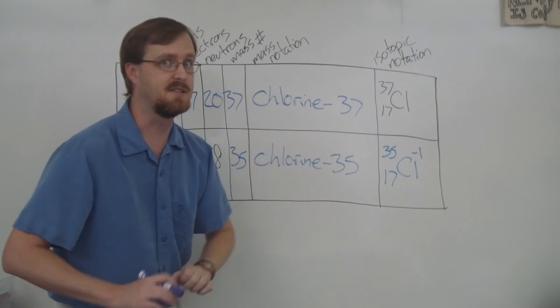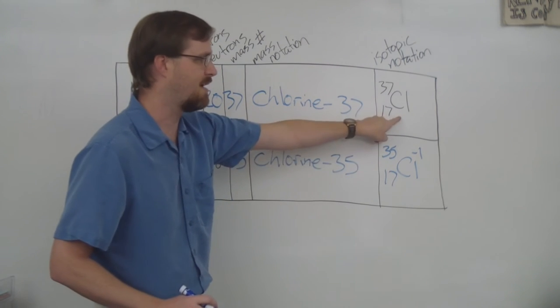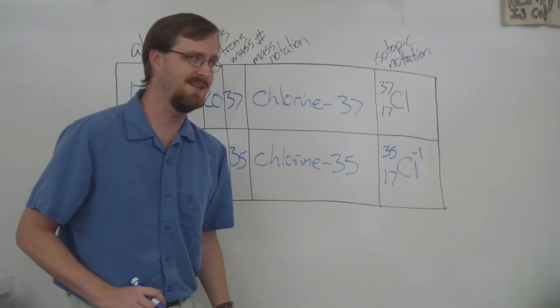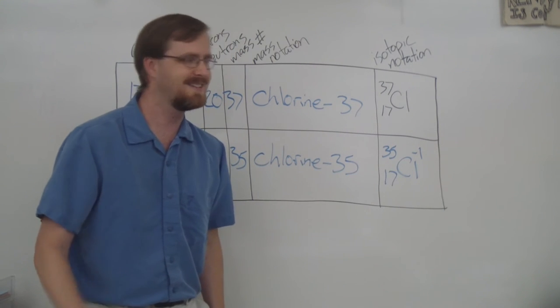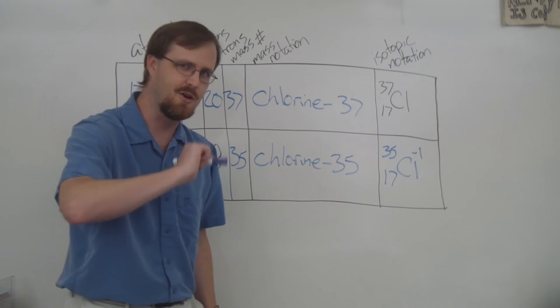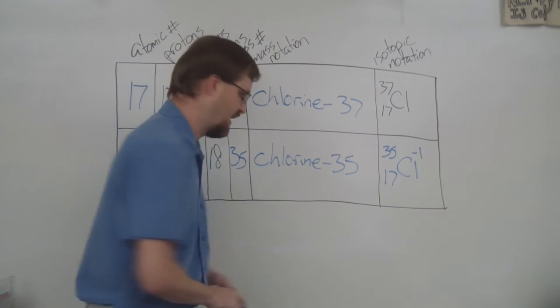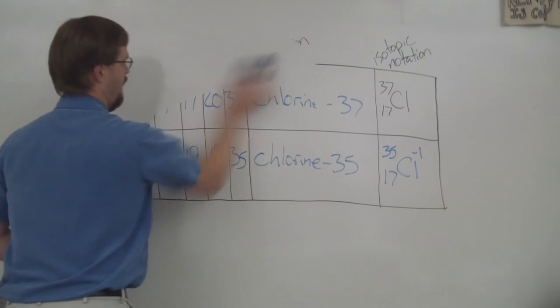Therefore, these are isotopes. This particular atom has no charge, so it is a neutral atom. This one has a charge, so we call that an ion. So thank you so very much, but wait, there's more! We have the bonus round.